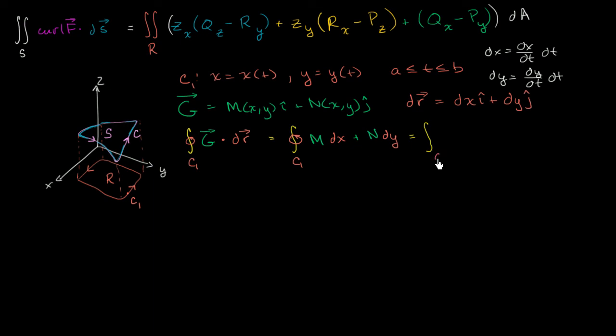We are in the t domain between a and b. This is going to be equal to m times, instead of writing dx, I'm going to write dx dt, dt.